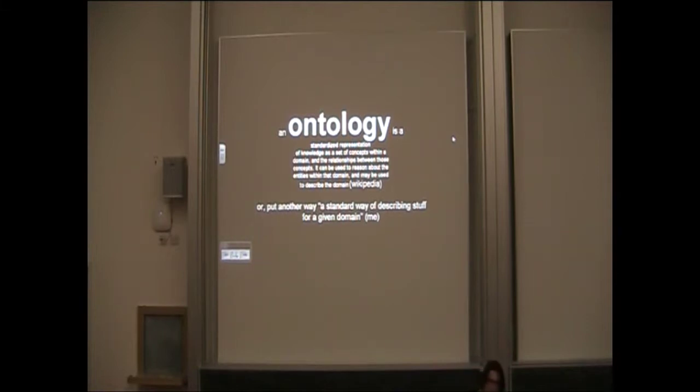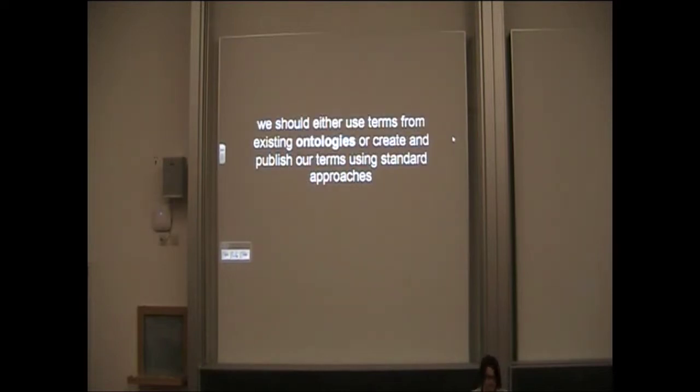Why is that not good enough? Because if we just put our data out in a non-standard way, how will someone else understand it? That's where ontologies come in. Ontologies are a standard way of describing stuff for a given domain. Dublin Core is a very good example of a really simple ontology. We shouldn't just put our data out without an ontology. We can take one of two approaches: we can either use terms from an existing ontology, such as Dublin Core, or create and publish our own terms using standard approaches.